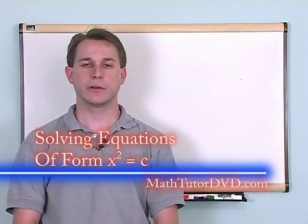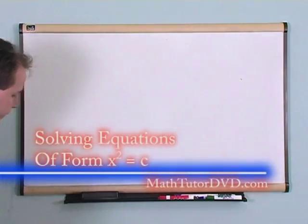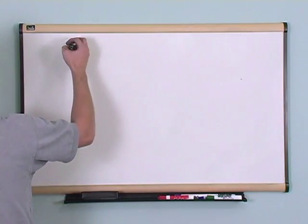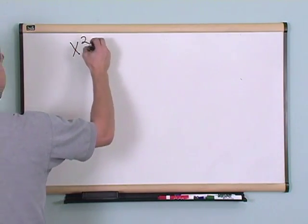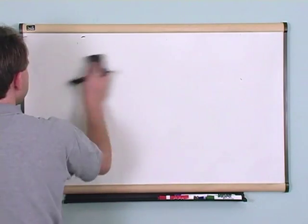Okay, in this section of the class we're going to learn how to solve equations of the form x squared equals c, and you'll see what I mean by that as I write it on the board. We haven't actually solved too many equations of this type before, so we're going to go ahead and solve that now.